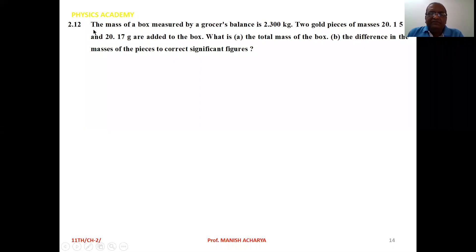Example 2.12: The mass of a box measured by a grocer's balance is 2.300 kg. Two gold pieces of masses 20.15 g and 20.17 g are added to the box. What is (a) the total mass of the box, (b) the difference in the masses of the pieces to correct significant figures?